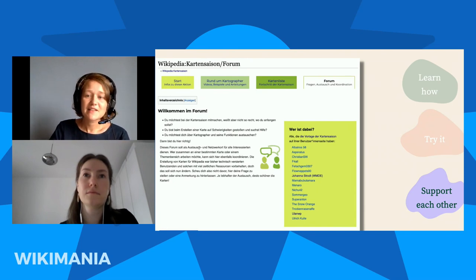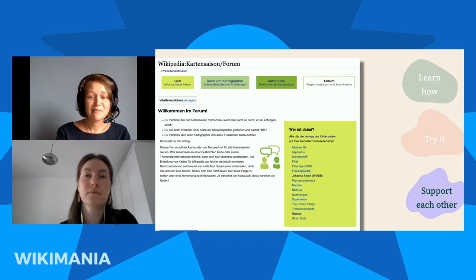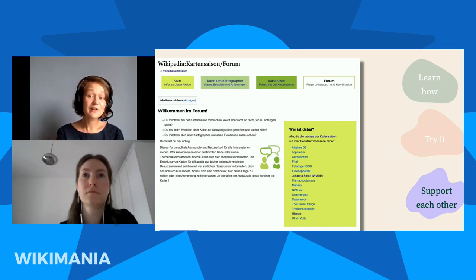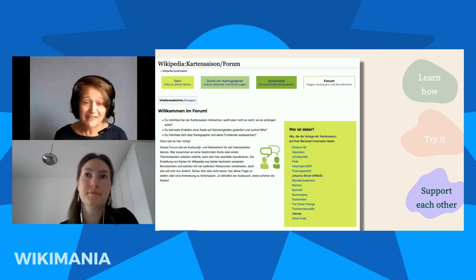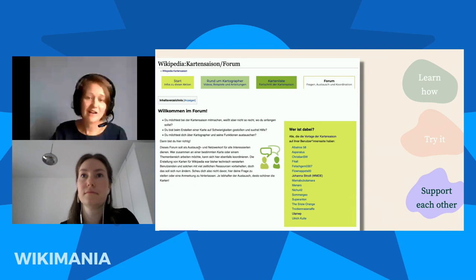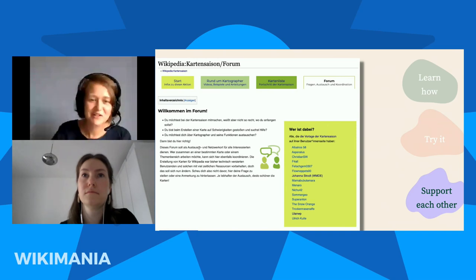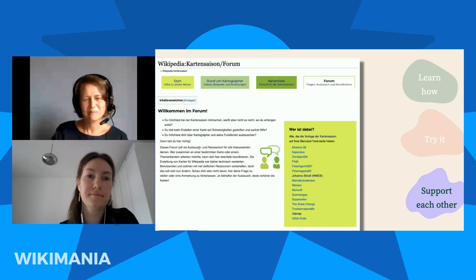Then there was the 'support each other' aspect. You might wonder why the community should support each other if you're the tech team behind the feature — but we as the Technical Wishes team aren't actually map experts. The real map experts are in the wiki community. So we were hoping contributors would support each other. To achieve that, we prominently added a forum to the wiki page where people could ask questions, report problems, and discuss anything around Kartographer maps. It's basically a simple talk page, but we hoped putting it there prominently would inspire people to use it.